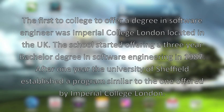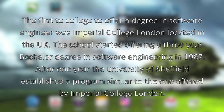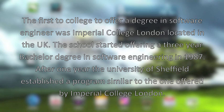The first college to offer a degree in software engineering was Imperial College London, located in the UK. The school started offering a three-year bachelor's degree in software engineering in 1987. After one year, the University of Sheffield established a similar program.